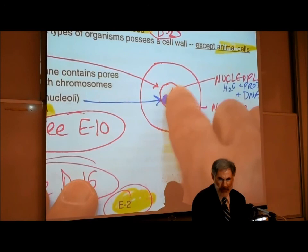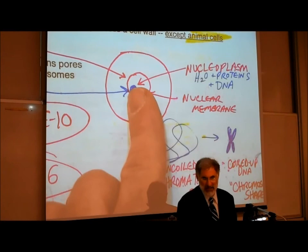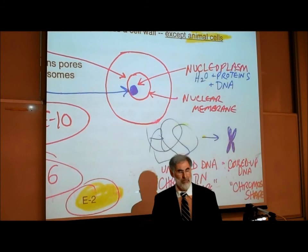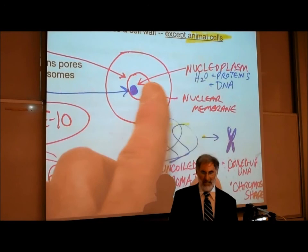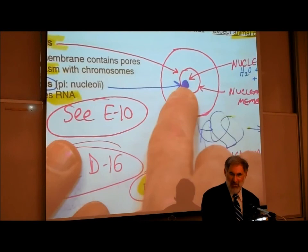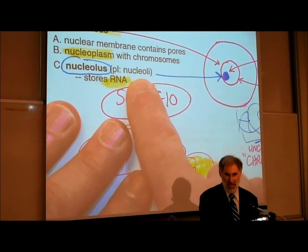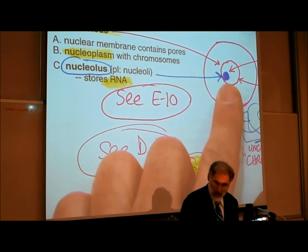Just as the cytoplasm is mostly water and protein, the nucleoplasm inside the nucleus is mostly water and proteins as well. In addition to water and proteins, inside the nucleus there is also DNA. Also in the nucleus is an area called the nucleolus — or nucleoli if there's more than one — which contains the chemical RNA.